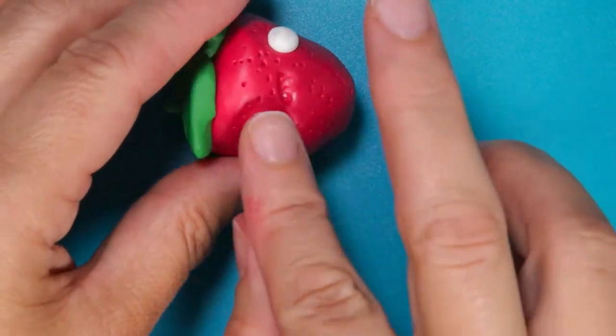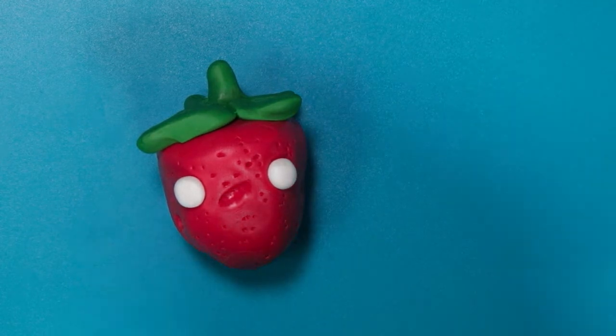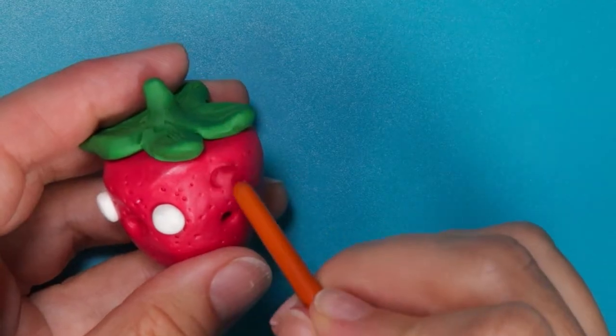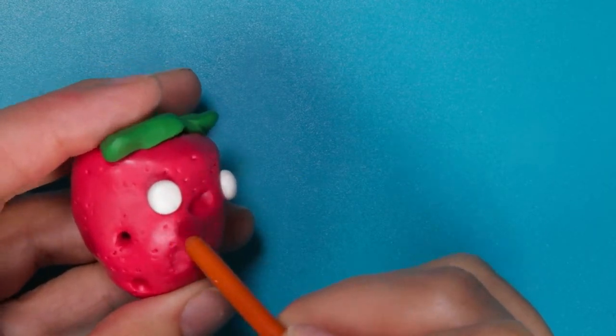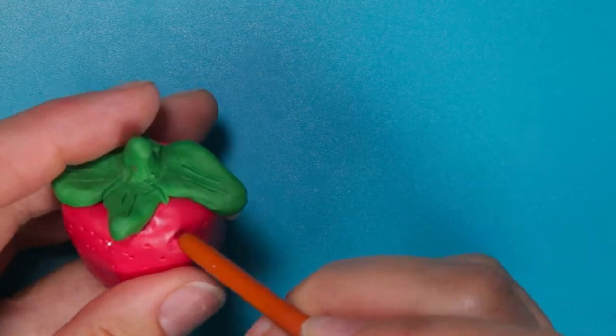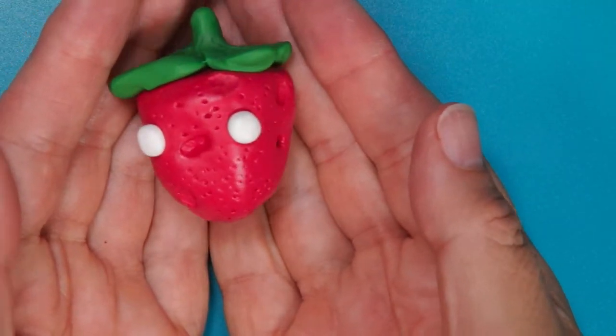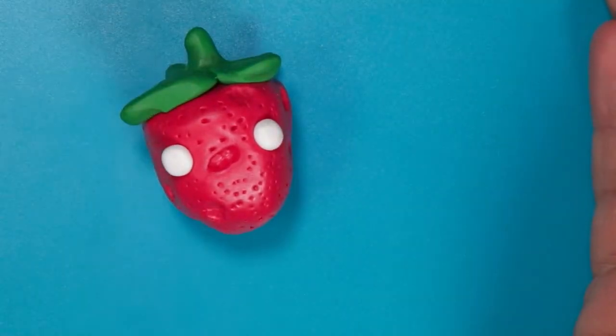Use the end of your paintbrush to carve out areas where the flesh might look exposed. This kind of gives it a more zombie-like feel. This is also where we will be inserting our little mold bits. Now your strawberry is ready to bake or air dry depending on the brand that you use.